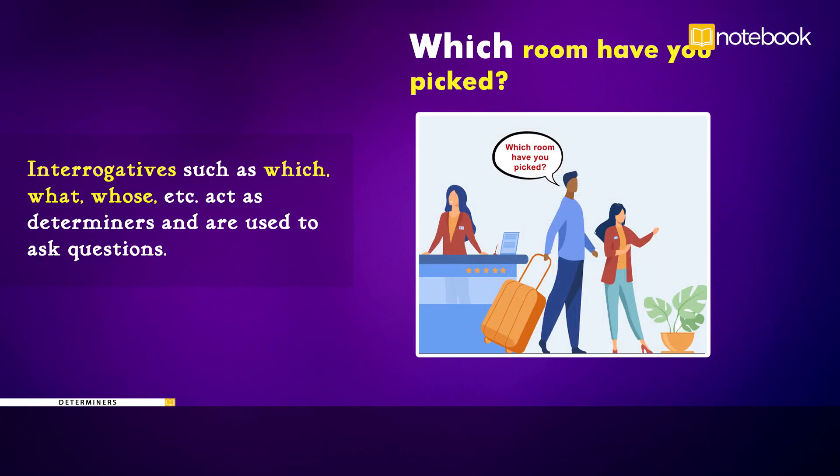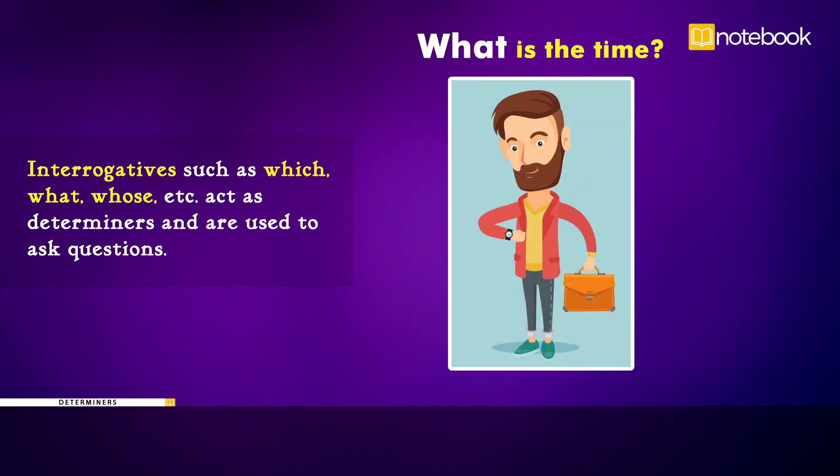Interrogatives such as which, what, whose, etc. act as determiners and are used to ask questions. Examples: Which room have you picked? What is the time? Whose umbrella is this?